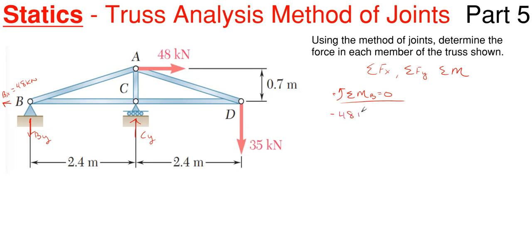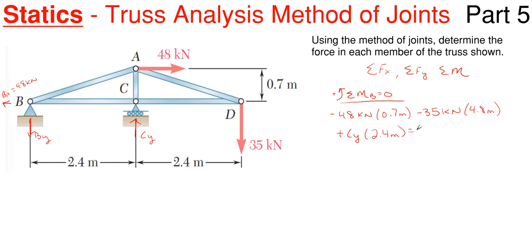The 48 kilonewtons will be rotating clockwise about B, so it'll be negative based on my sign convention of counterclockwise being positive. It has a perpendicular distance to B of 0.7 meters. The 35 kilonewtons is also rotating clockwise so it's negative, times its perpendicular horizontal distance to B of 4.8 meters. Then C sub Y, assumed upward, gives a counterclockwise positive moment times its perpendicular distance of 2.4 meters, equal to zero. So C sub Y comes out to be positive 84 kilonewtons, meaning my assumption of upward was correct.